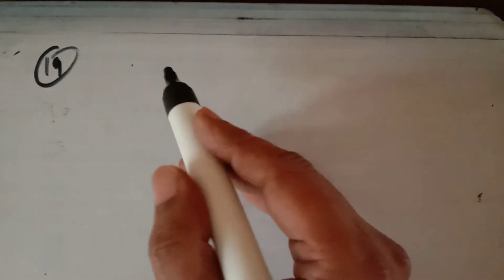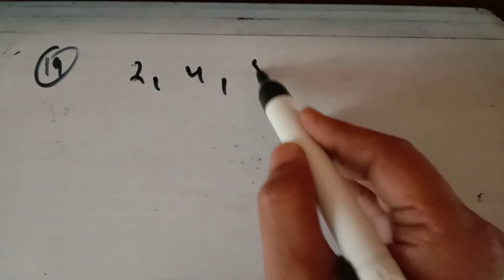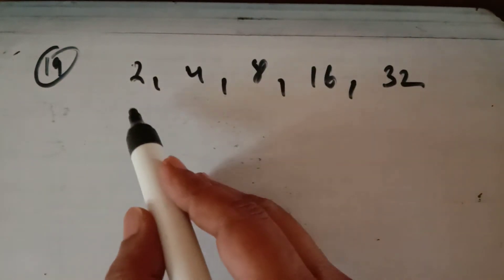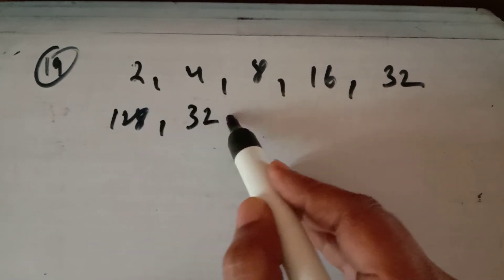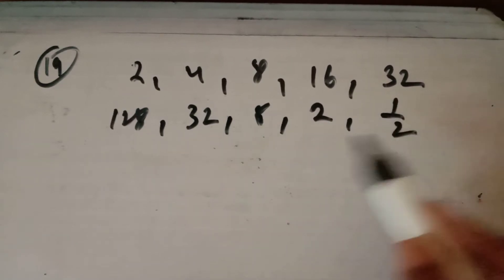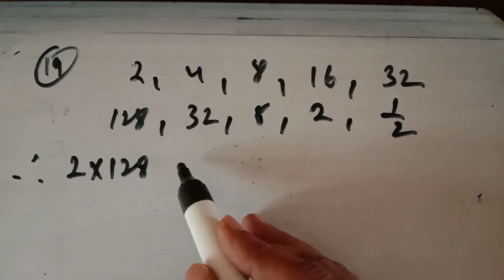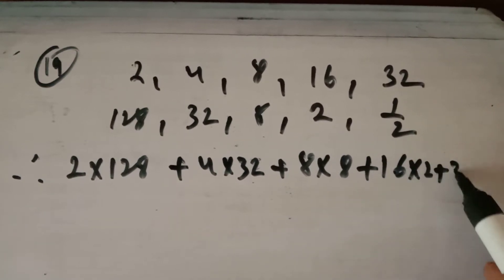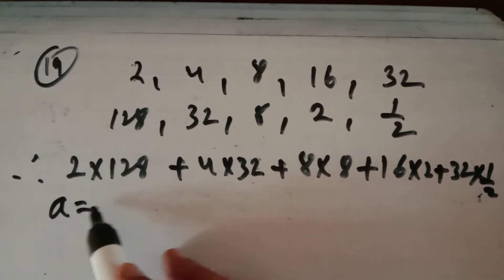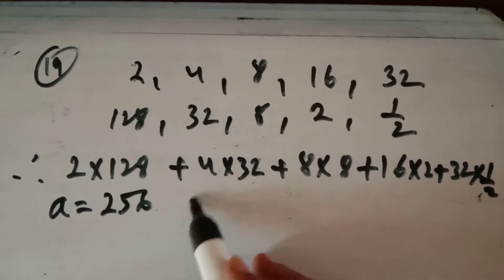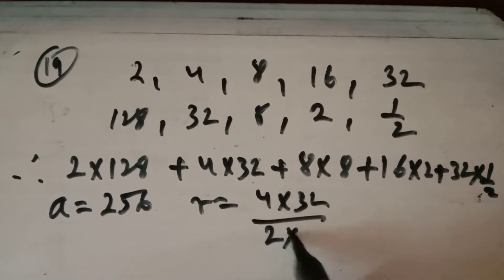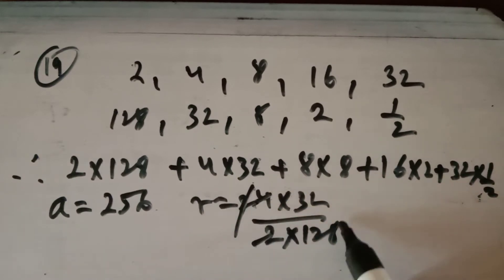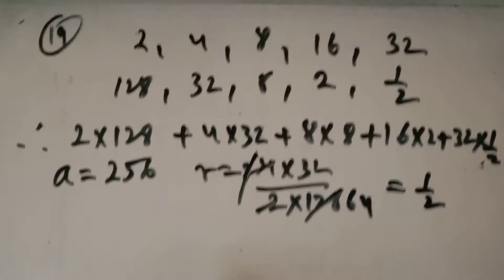In question number 19, two sequences are given: 2, 4, 8, 16, 32 and 128, 32, 8, 2, 1/2. We find the sum of products of their corresponding terms: 2×128, 4×32, 8×8, 16×2, 32×(1/2), giving 256, 128, 64, 32, 16. This is a GP with first term 256, common ratio 1/2, and 5 terms.